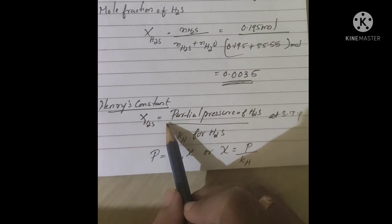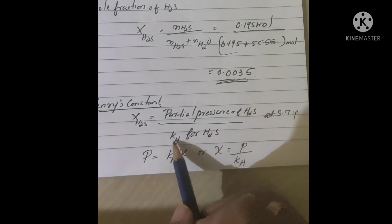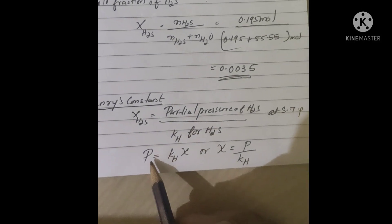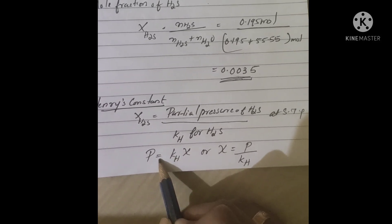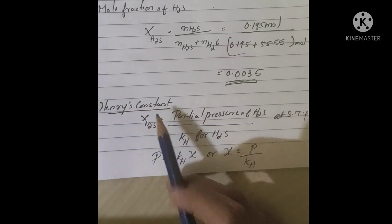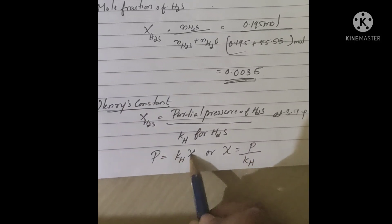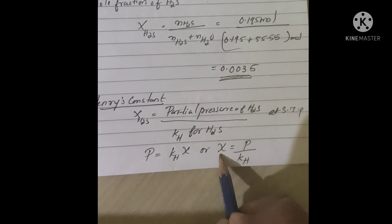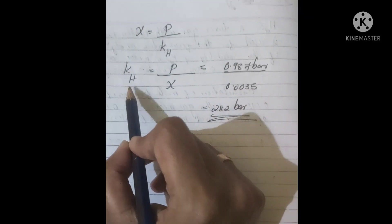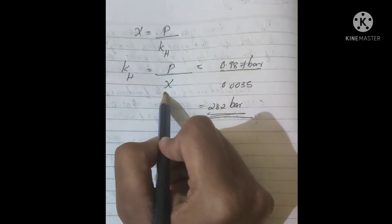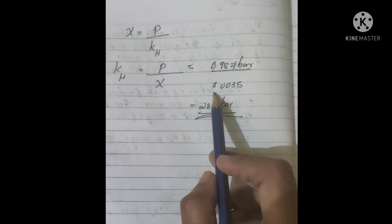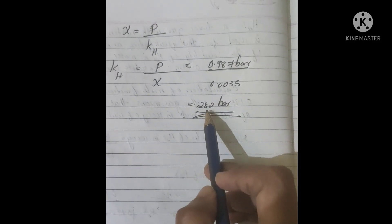Henry's law states that partial pressure equals KH times mole fraction. KH is Henry's constant, which is different for different gases. From this equation, KH equals partial pressure of H2S divided by mole fraction of H2S — that is 0.987 bar divided by 0.0035 — which equals 282 bar. This is the Henry's law constant for H2S.